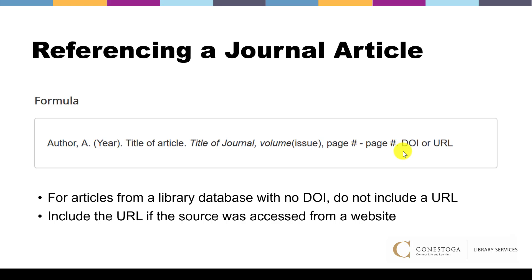A DOI is a digital object identifier that is often given to academic journal articles and books to uniquely identify them. Not all academic journals and books include a DOI. For articles from a library database with no DOI, do not include a URL. Include the URL only if the source was accessed from a website other than the library website.